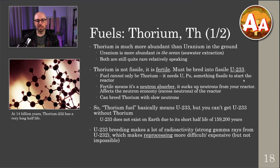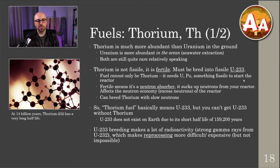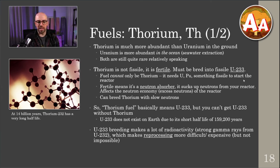Now let's move on to thorium — another possible nuclear fuel. It's more abundant than uranium in the ground, but interestingly, uranium is actually more abundant than thorium in the ocean. Seawater extraction of uranium is a real thing that could happen someday. Thorium is not fissile — it is fertile, like uranium-238. You have to breed thorium-232 with a neutron and it can become uranium-233, which is a fissile isotope.